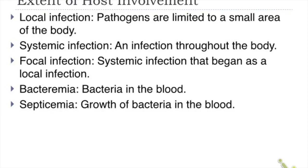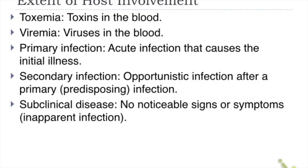Bacteremia is the mere presence of bacteria in the blood. Septicemia means bacteria are present in the blood and actively multiplying — much more severe than bacteremia. The presence of toxins in the blood is called toxemia, which is dangerous and may result in toxic shock. The presence of viruses in the blood is called viremia.